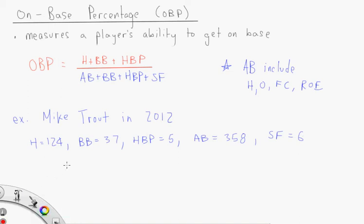So, when we write out our equation, it's just a matter of plugging in these variables. So our hits, 124, plus our walks, 37, plus the number of times a batter's been hit by a pitch, which is 5.